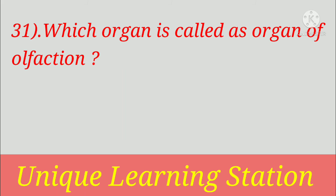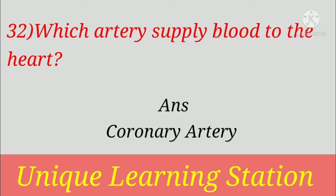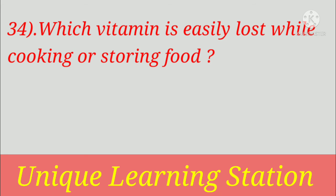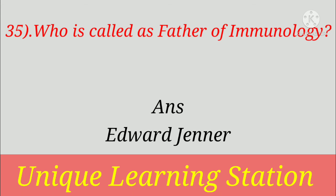Which organ is called the organ of olfaction? Answer: nose. Which artery supplies blood to the heart? Answer: coronary artery. Largest gland in the human body is? Answer: liver. Which vitamin is easily lost while cooking or storing food? Answer: vitamin C. Who is called the father of immunology? Answer: Edward Jenner.